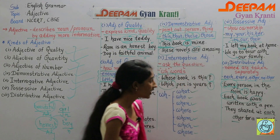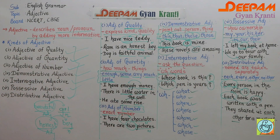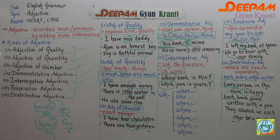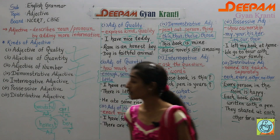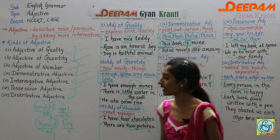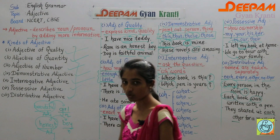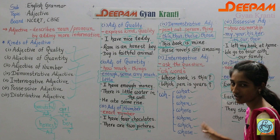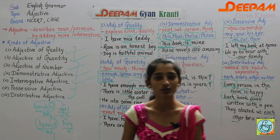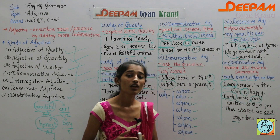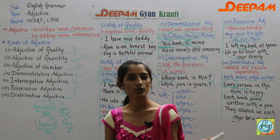So these are the seven kinds of adjectives: adjective of quantity, adjective of quality, adjective of number, demonstrative adjective, interrogative adjective, possessive adjective, and distributive adjective. An adjective tells something about a noun or pronoun and occurs before the noun. I hope you understood this. If you have any doubt, write in the comment box and I will try to solve your query. Till then, goodbye, have a nice day.